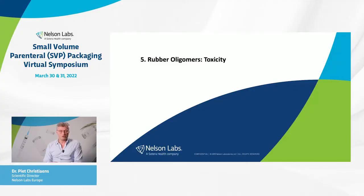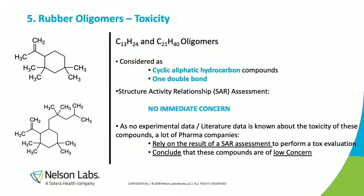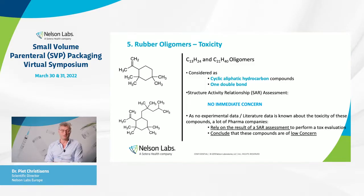Now to close, we look at the toxicity. For the oligomers that are not halogenated — cyclic aliphatic hydrocarbons with one double bond — the only way to assess toxicity is a structure-activity relationship assessment, and the outcome there is that there is no immediate concern. However, there is no experimental literature data to confirm that, so you can only rely on a SAR assessment to perform your toxicological evaluation.